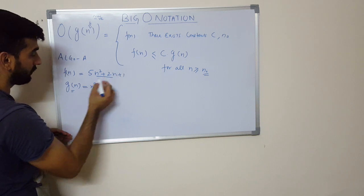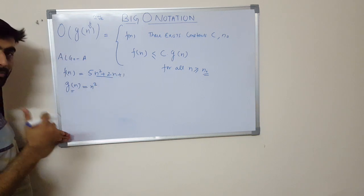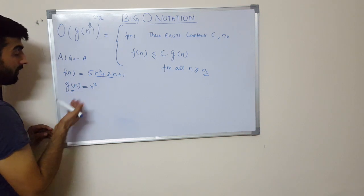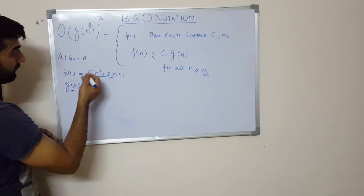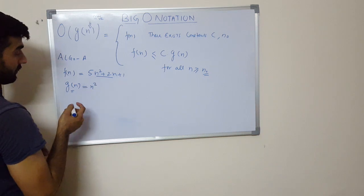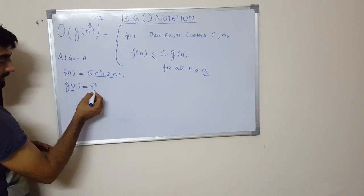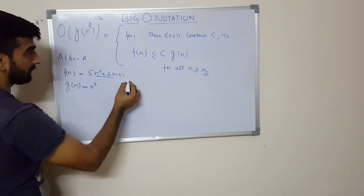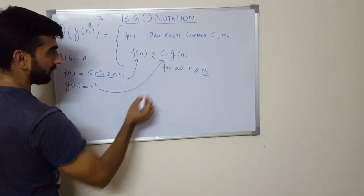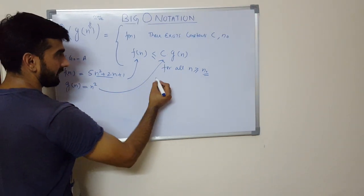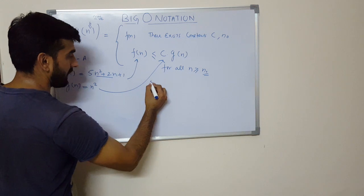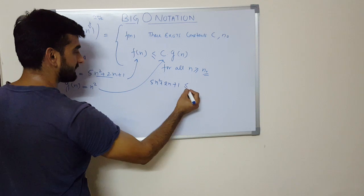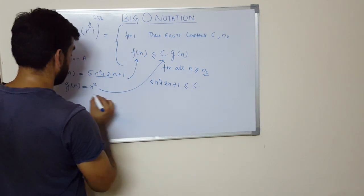Now for this hypothetical value of how n² comes out, you can watch my previous video. In that previous video I have described how we can calculate the rate of growth from time complexity. So g(n) is n². So if we try to fit these two values inside this expression, then it becomes like this: f(n) is my 5n² + 2n + 1, which is less than or equal to c times g(n).